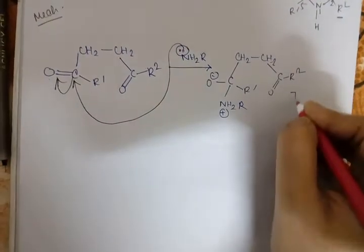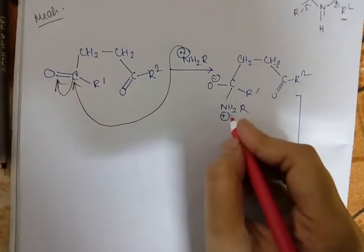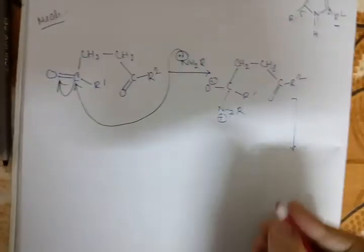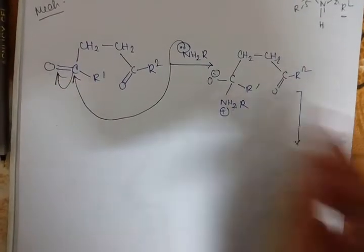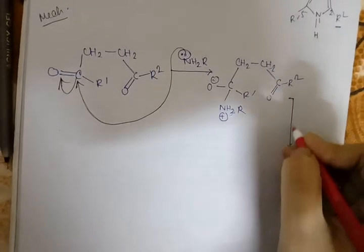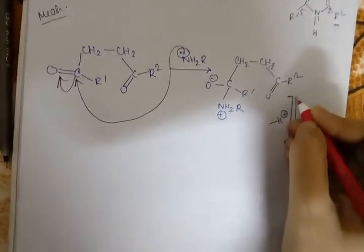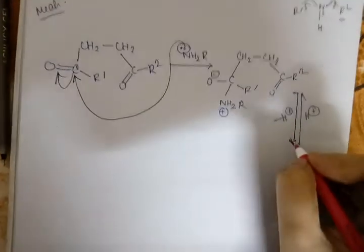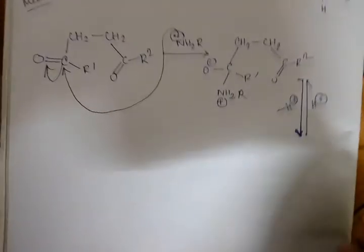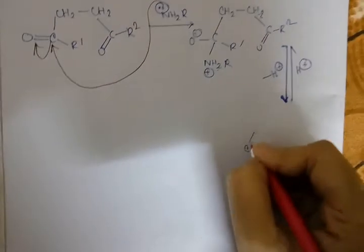So now one hydrogen will release from here and this H+ will be captured by this O minus. Hence in forward reaction, one H+ will release, and in backward reaction, this H+ will be captured by O minus. Now the intermediate will be formed with H, NH, R, and R prime.